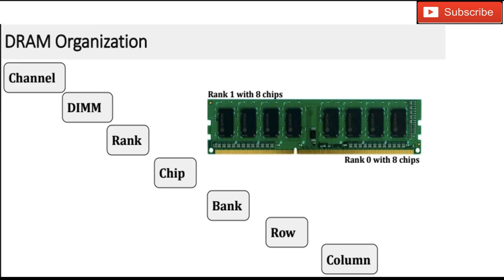To understand what exactly a DRAM is, we have to look at the structure of a particular DIMM — DIMM stands for Dual Inline Memory Module. This is called dual inline because it contains chips on this side as well as on its opposite side, so there are a total of eight chips on one side and eight chips on the back side.